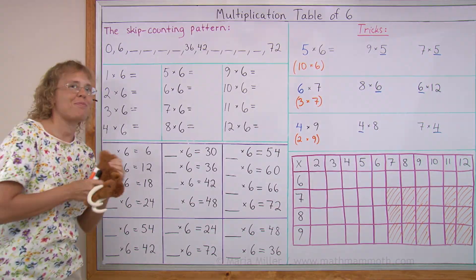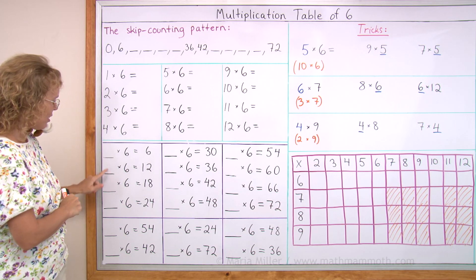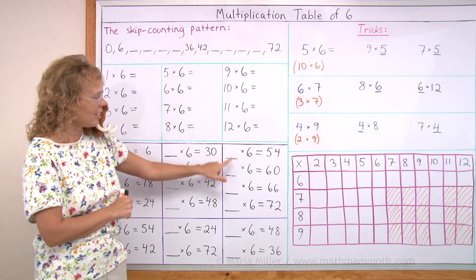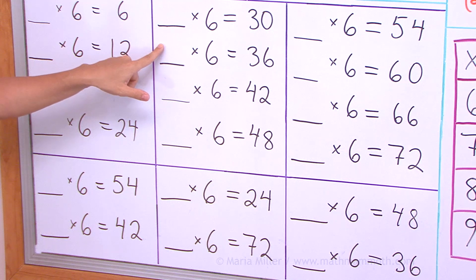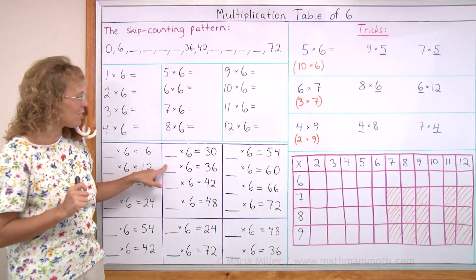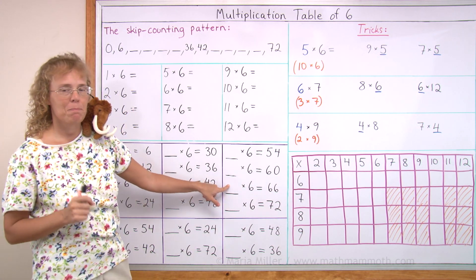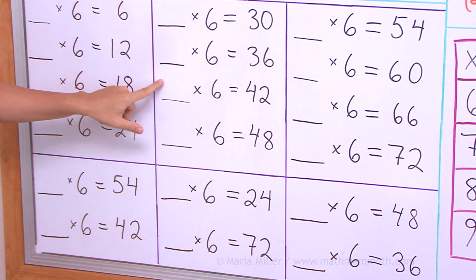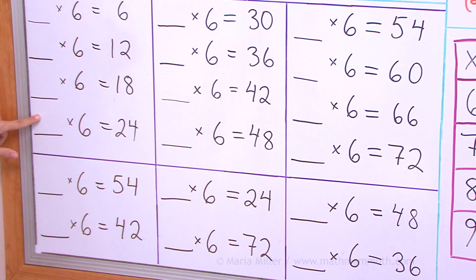Alright, good job! Now we'll practice the table backwards. You know what numbers go here — 1 through 12. Let's try: how many times 6 is 36? — 6, that's the rhyming one, 6 times 6 is 36. How many times 6 is 66? — 11. How many times 6 is 54? — 9. And how many times 6 is 42? — 7. How many times 6 is 24? — 4.